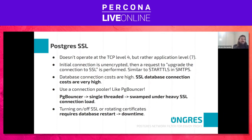This is not the classical TLS you're thinking of. Postgres SSL doesn't operate at layer four of the OSI model but rather at the application level — similar to what STARTTLS does. You start with an unencrypted connection, a request is made to upgrade the connection to SSL, and then you switch to an encrypted connection. That's why this functionality will leverage the StartTLS feature implemented in Envoy 1.17.